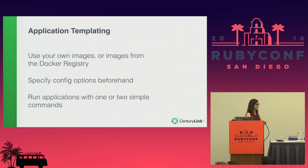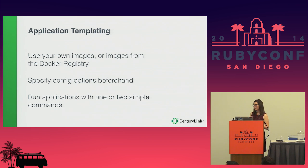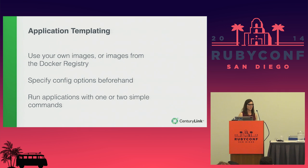The good news is that you can make a computer do the work for you with Docker. There's this idea called application templating, and that's what my team and I spend our time working on — the equivalent of `foreman up` but for Docker containers. If you understand and configure your container or application once, you can put it into an application template. Instead of running each container independently, you run the template, which takes care of running all containers with the various configuration options you've already specified. You can use your own images or images from the Docker registry, specify your options beforehand, and then run the application as a whole.